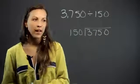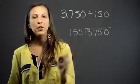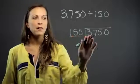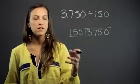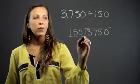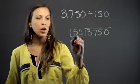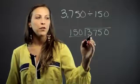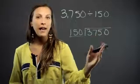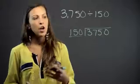So like any other long division, you take the number on the outside and you ask yourself: can it go into the first digit? Can 150 go into 3? It can't, so we move on to the next number. Can 150 go into 37? No. Can 150 go into 375? It can, but now you have to decide how many times.